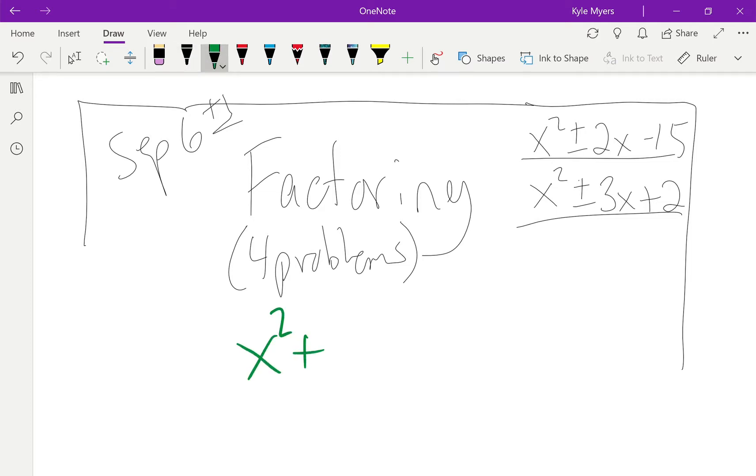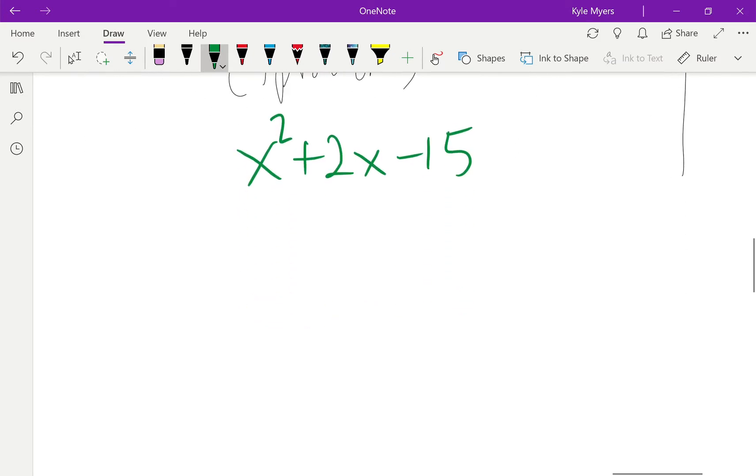x squared plus 2x minus 15, right? So obviously 1 and 15 make 15 when I multiply, but if I subtract, they do not give me 2. So that's not going to work. 15 doesn't go into 2, but it does go into 3. It goes into 3 five times, and check that out. If I subtract 3 and 5, I get 2, and that's exactly what I want to get. So I just need a positive 2, so I need to make that negative and that positive. Throw some x's in front, and there we go. We have the answer.